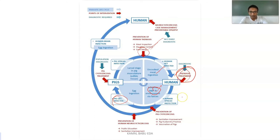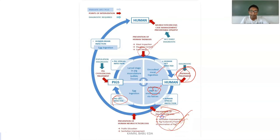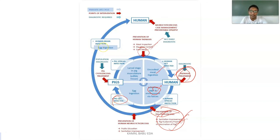If treatment has not been given and the human has already spread the infection, cysticercosis in the pig can be prevented through sanitation improvement, proper pig husbandry practices, and vaccination of pigs, so that the meat does not become infected. Additionally, the larval stages can also affect human beings directly — if eggs enter the human brain, they can cause severe symptoms such as epilepsy.